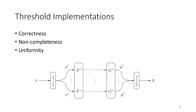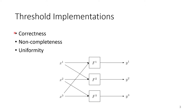To start the work, we first explain what threshold implementations are. Threshold implementations are masked circuits where an input is first put through an encoder function — that input is shared with randomness — then put through the masked functions, and at the end of the computation all shares are decoded again. These masked functions adhere to three properties: correctness, non-completeness, and uniformity.